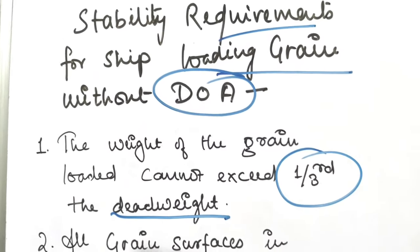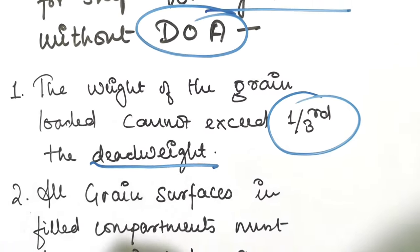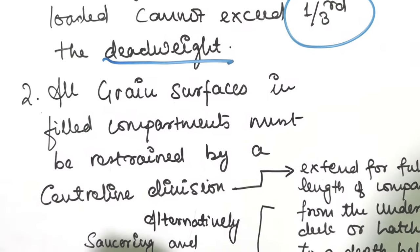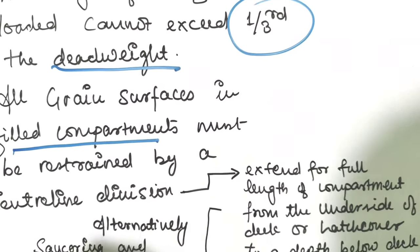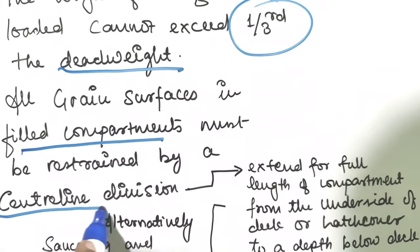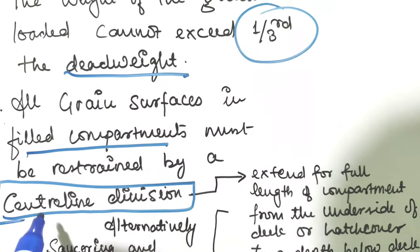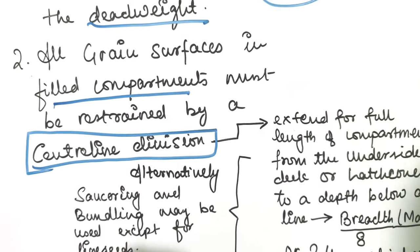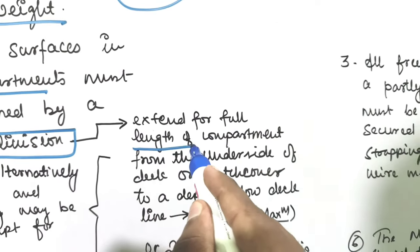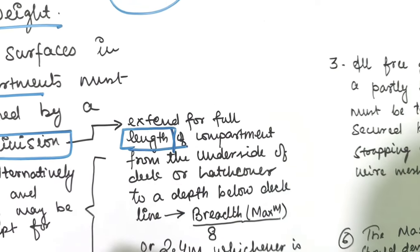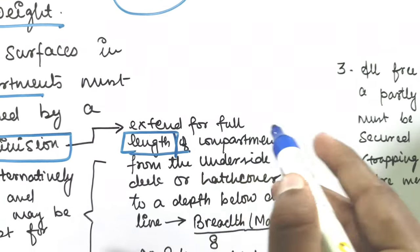Second, all grain surfaces in filled compartments must be restricted by a centerline division. The keyword is must be restricted by a centerline division. This centerline division extends for the full length of the compartment.